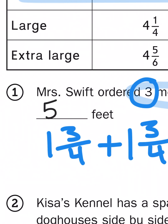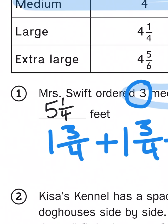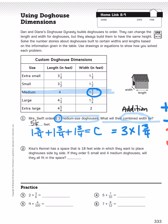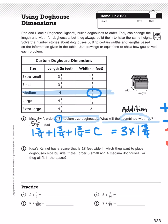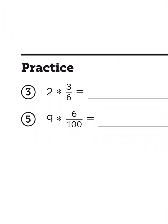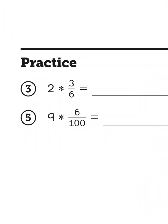If I take three doghouses and set them up side by side, they're going to be a total of five and one-fourth feet wide. Now, before we go, let's take a look at one of the practice problems at the bottom — multiplication with fractions. Remember, when you multiply a fraction by a whole number, you're just multiplying the numerator and doing nothing with the denominator.